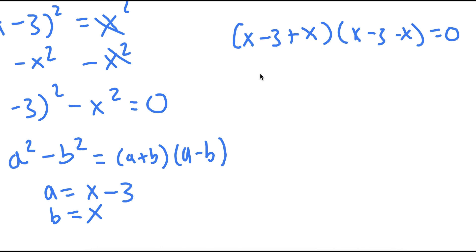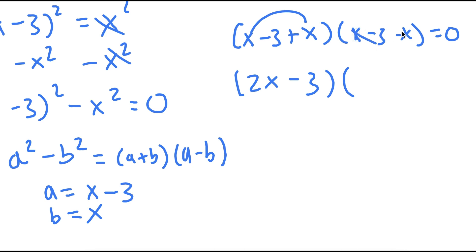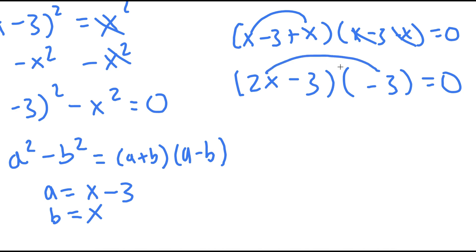So all we have to do is simplify this. For x minus 3 plus x, I'm going to add these two x's, so now I have 2x minus 3. Times x minus 3 minus x — the x and negative x cancel out, leaving negative 3. So now I have 2x minus 3 times negative 3. Distributing: negative 3 times 2x is negative 6x, and negative 3 times negative 3 is positive 9, equal to 0.